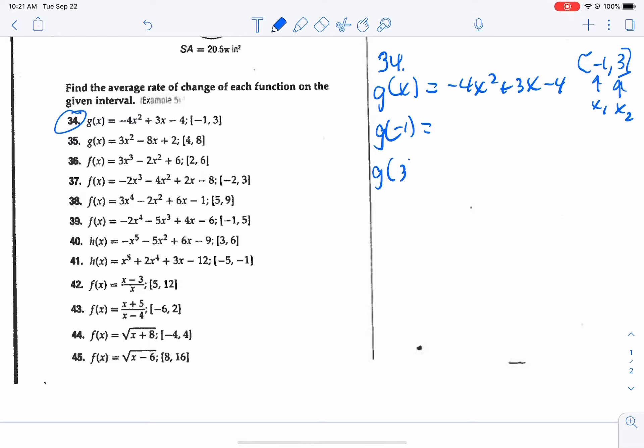So we're going to plug in x sub 1, which is negative 1, and we're going to plug in 3. So it's going to be negative 4 times negative 1 squared, which is negative 4, minus 3 minus 4, which is negative 11. And we're going to plug in 3. So that's going to be negative 4 times 9, which is negative 36, 3 times 3 is 9. So that's going to be negative 31.